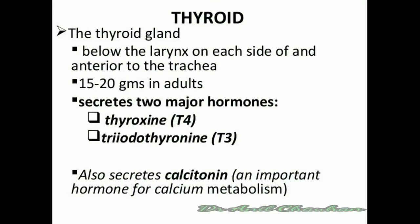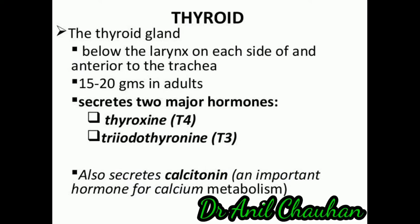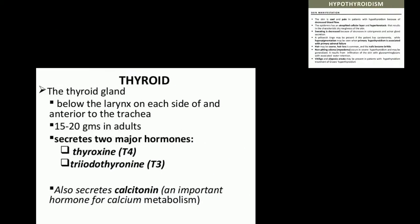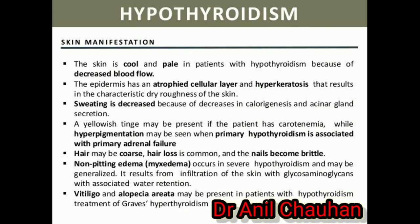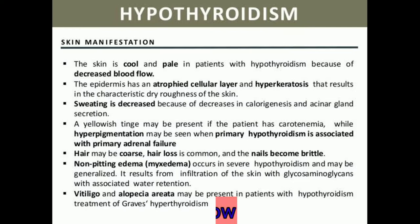What is the anatomical position of the thyroid gland in the body? It is located below the larynx, on each side of and anterior to the trachea. The weight is 15 to 20 grams in adults. It secretes two hormones: T4 thyroxine and T3 triiodothyronine.